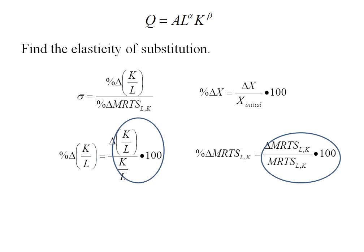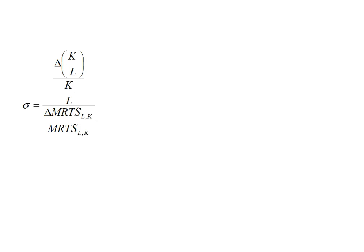We'll have our numerator and denominator for sigma. Plugging those into the sigma equation, the 100 cancels out so I've left it off. Now this is a big fraction over another big fraction. I'm going to reduce this by taking that denominator fraction and flipping it up, multiplying by the reciprocal, giving me delta K/L over K/L times MRTS over delta MRTS. I'll rearrange so both delta terms are on the left and both non-delta terms are on the right.